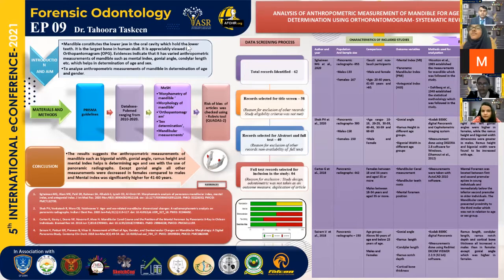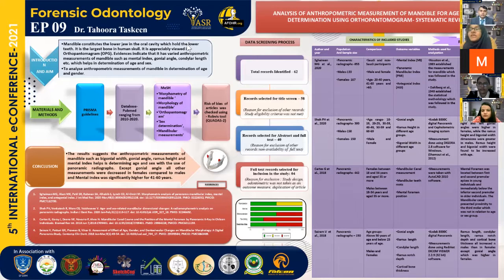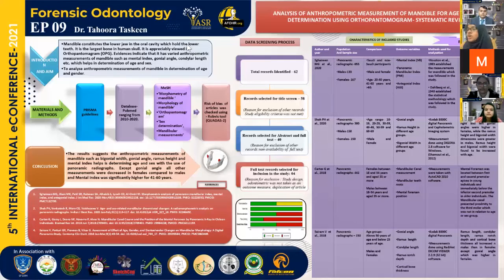The fourth study considered was Sairam V. et al. (2018), using 150 panoramic radiographs, comparing age groups above 50 years and below 25 years, across males and females. Outcome variables were gonial angle, ramus length, condylar length, ramus notch depth, and cortical bone thickness. Methodology followed was similar to Shah et al., using the Kodak 8000 digital panoramic system. Results showed that except for gonial angle, all other measurements were higher in males.